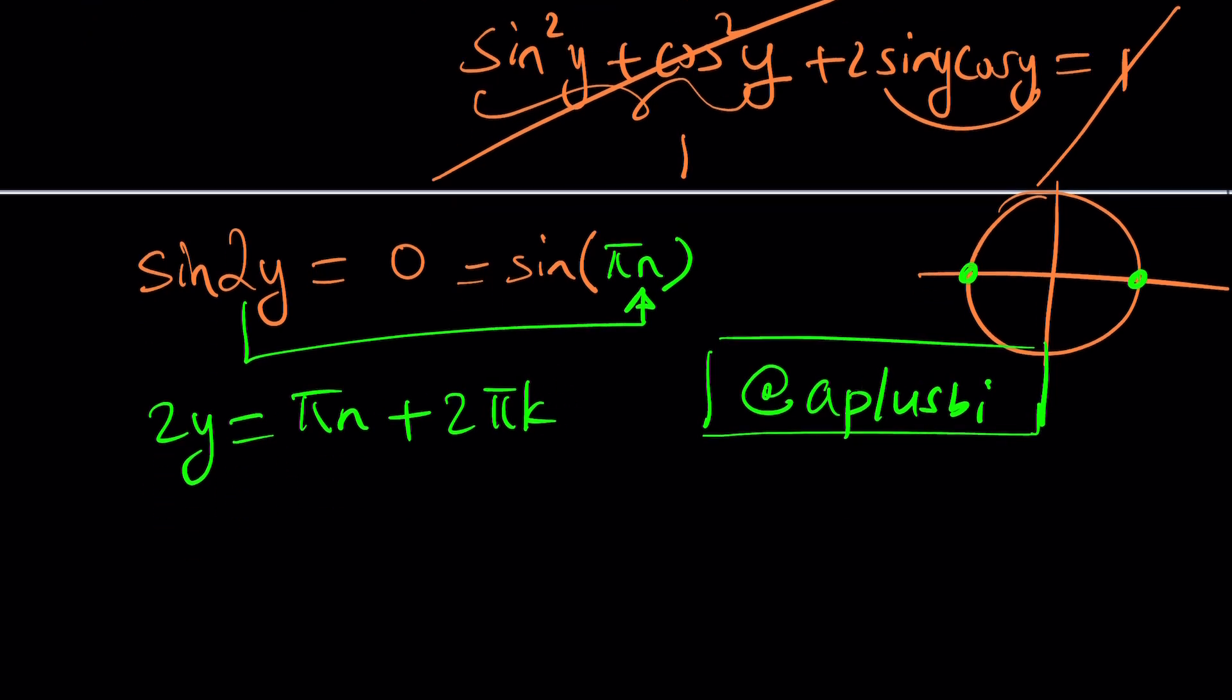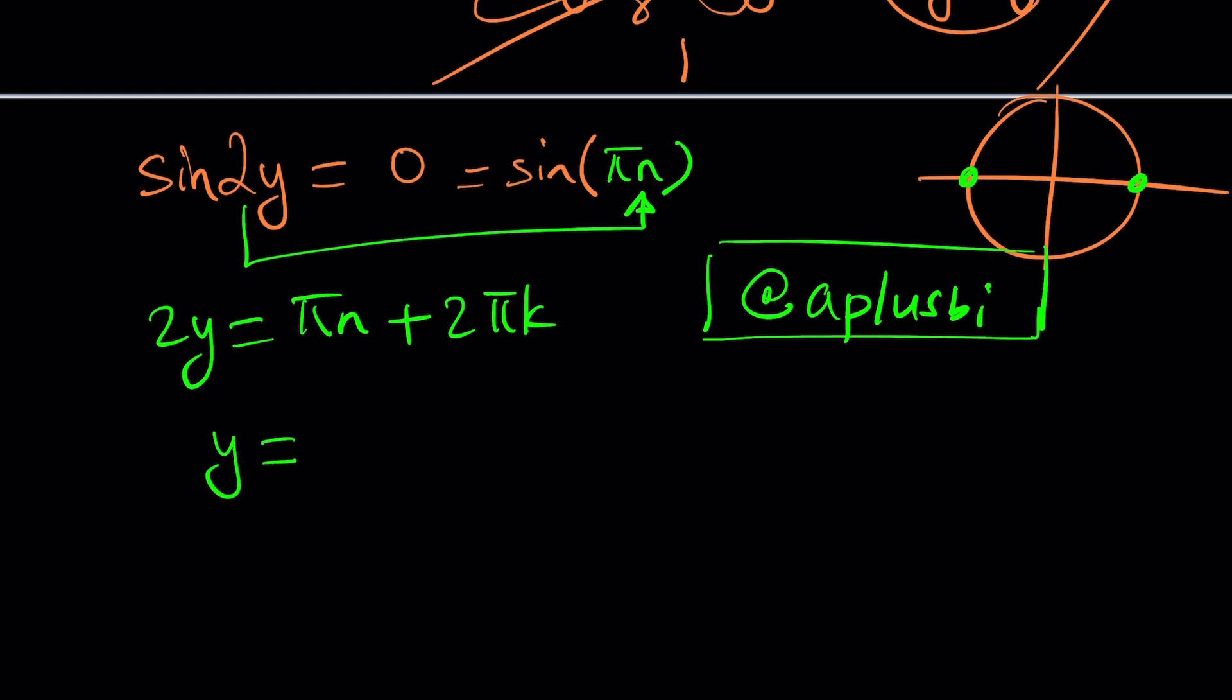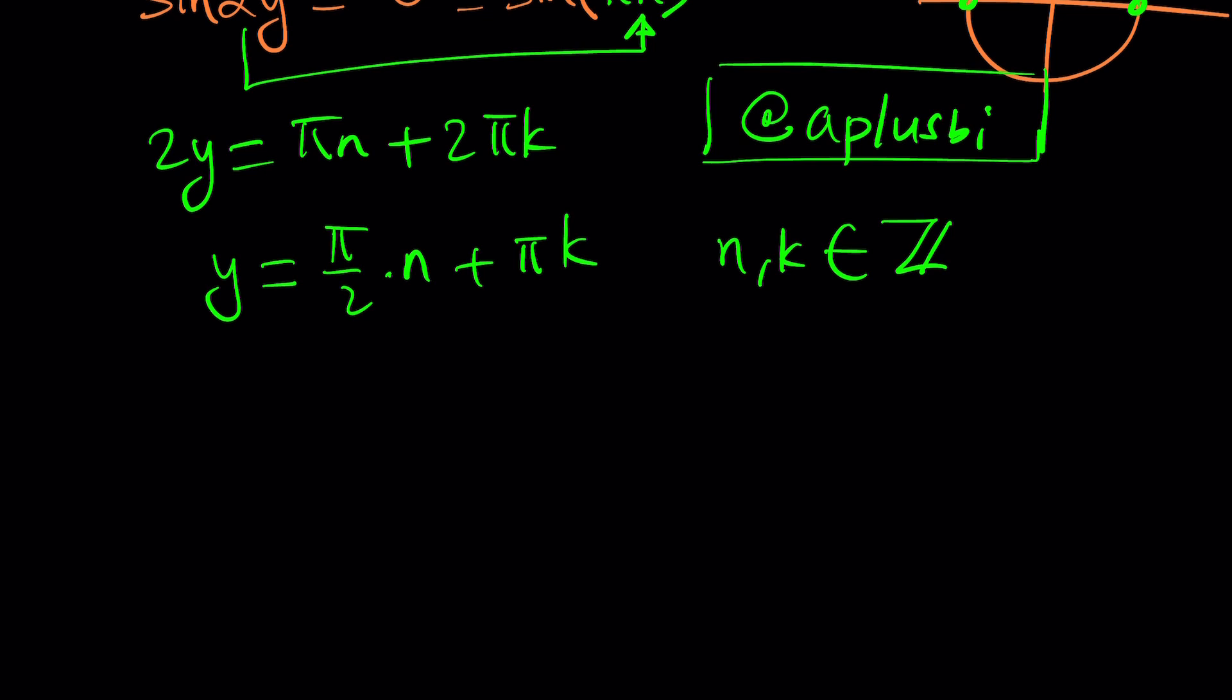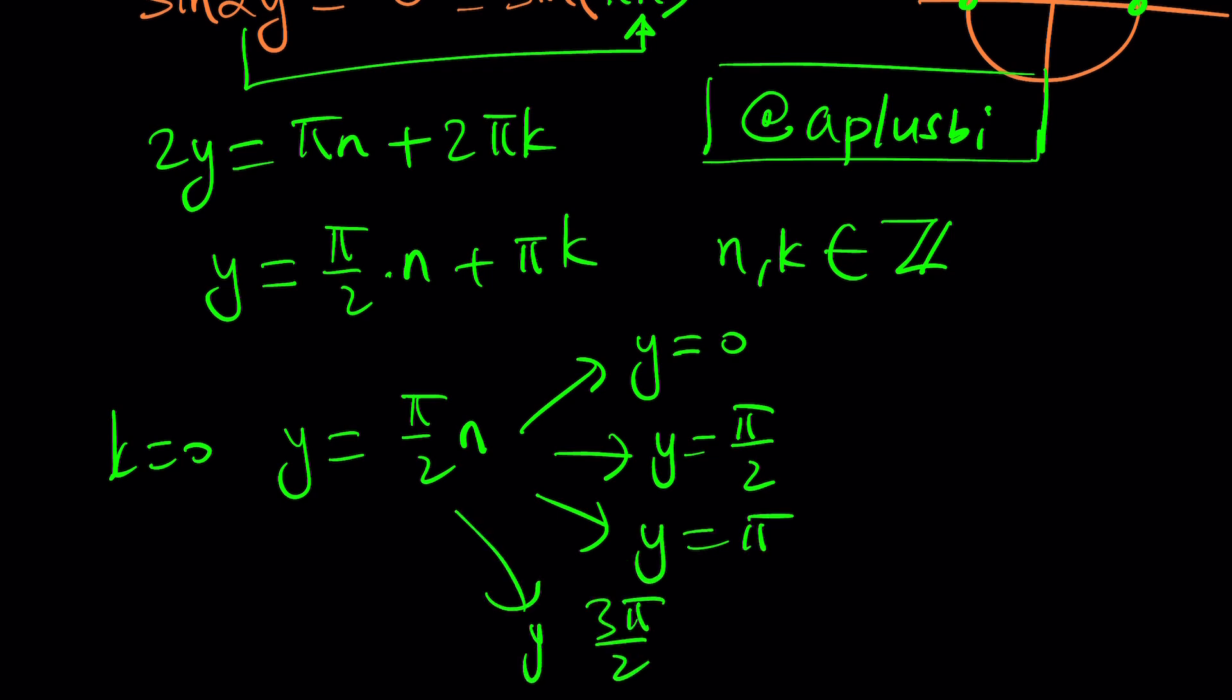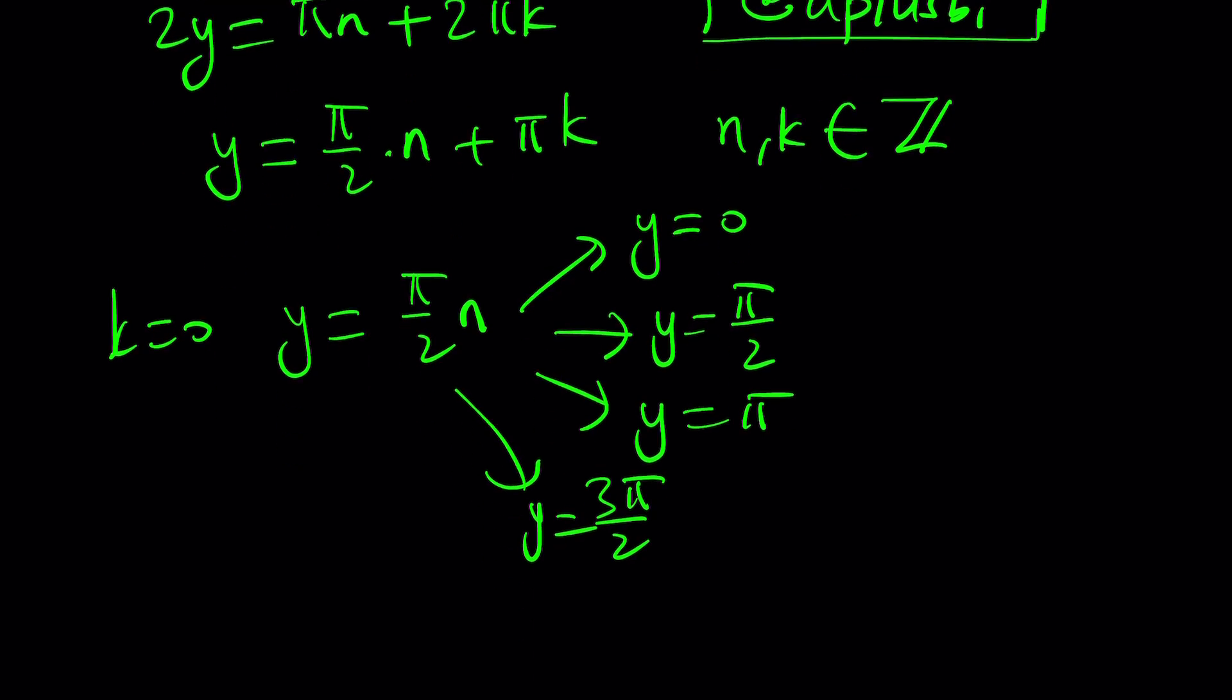From here, we can get a solution like this: y = π/2 × n + πk, where n and k are integers. Now, for example, if k = 0, then we get y = πn/2. And for particular values of n, for example, if n is 0, y is 0. If n is 1, then we get π/2. And then we get 2π/2, which is π. And then we get 3π/2. And then we get 4π/2, which is 2π, which is 0. So you can kind of stop here. But this is only for k = 0. Of course, if k is 1, then you get other solutions probably.